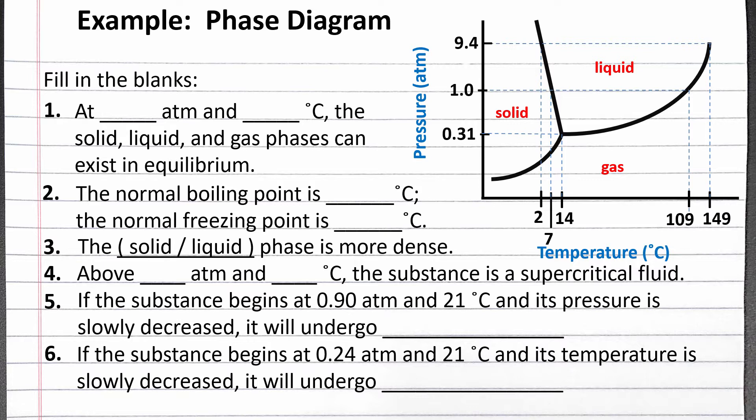For our first statement, we need to find the pressure and temperature at which the solid, liquid, and gas phases can exist in equilibrium. This is called the triple point, where all three curves come together. The triple point on this phase diagram is 0.31 atm and 14 degrees Celsius.